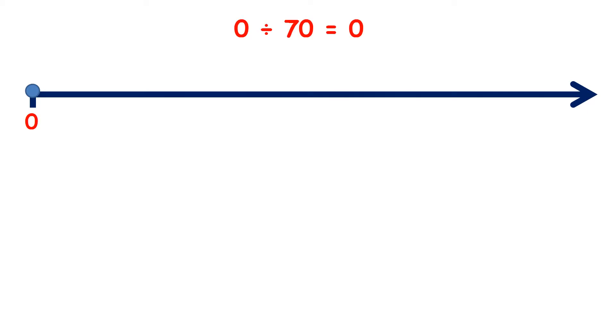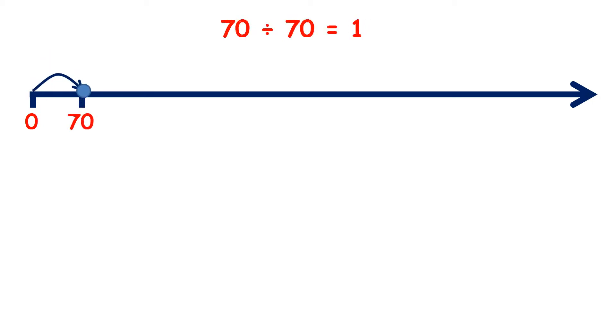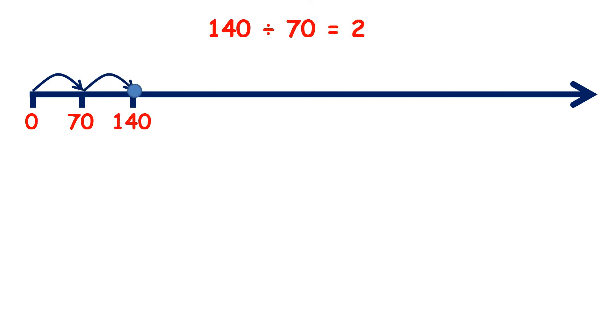Let's learn our division facts for the 70 times table. 0 divided by 70 is 0. 70 divided by 70 is 1. 140 divided by 70 is 2.